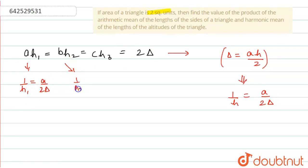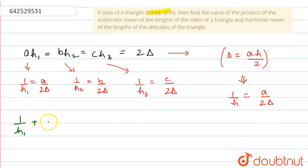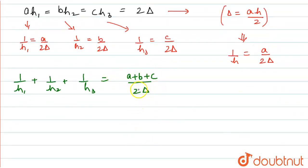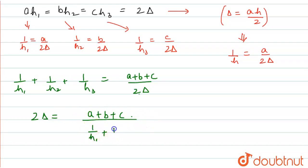From this, we can write 1/h2 = b/2Δ, and from this we can write 1/h3 = c/2Δ. Now, we know that 1/h1 + 1/h2 + 1/h3 = (a + b + c) / 2Δ. Cross-multiplying, taking 2Δ on the right-hand side: 2Δ = (a + b + c) / (1/h1 + 1/h2 + 1/h3).